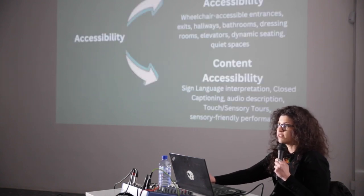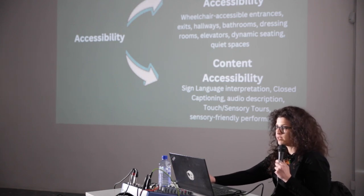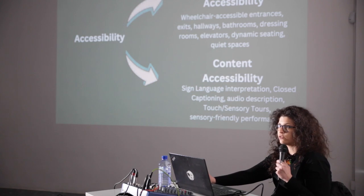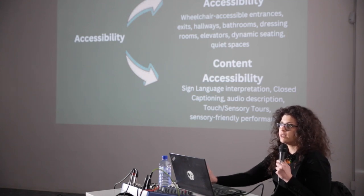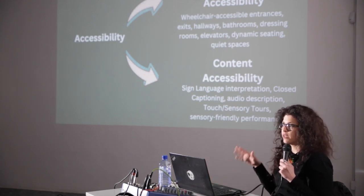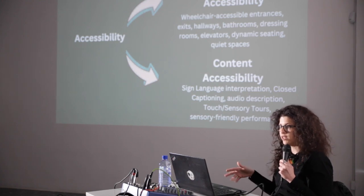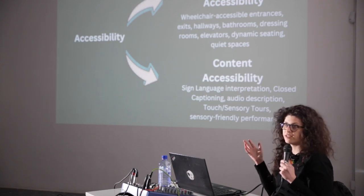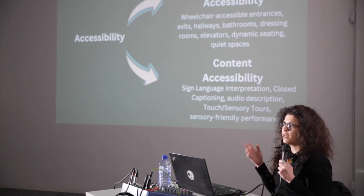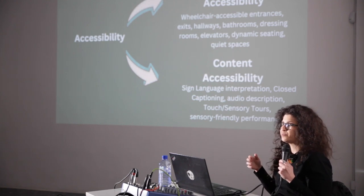Theatre accessibility consists of two main categories and includes all the factors connected to physical and content accessibility. Physical accessibility is about making the theatre space accessible and friendly — for example, wheelchair accessible entrances, exits, hallways, bathrooms, dressing rooms, dynamic seating, etc.